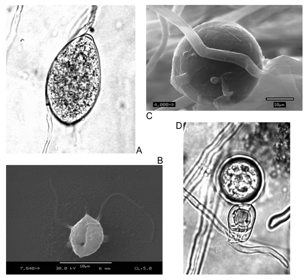Most oomycetes produce two distinct types of spores. The main dispersive spores are asexual, biflagellate spores called zoospores, which are capable of chemotaxis — movement toward or away from a chemical signal, such as those released by potential food sources including exudates on plant surfaces. A few oomycetes produce aerial asexual spores distributed by wind. They also produce sexual spores called oospores, which are translucent, double-walled, spherical structures used to survive adverse environmental conditions.